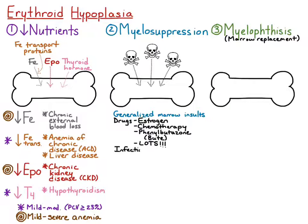Infectious agents that can cause generalized myelosuppression include feline leukemia virus, or FeLV, which can cause decreased production of all cell lines, but can also cause selective erythroid suppression as well. Parvoviruses in most veterinary species can also do this — you most recently learned about this in your case-based learning session involving a puppy that had severe GI upset or diarrhea.